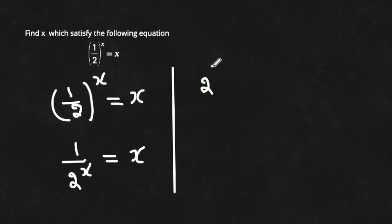We have (1/2)^x which is equal to x. Simplify it and write it as 1 over (1/2)^x equals x. Take the reciprocal on the left hand side, we get 2^x, and on the right hand side we have 1 over x.